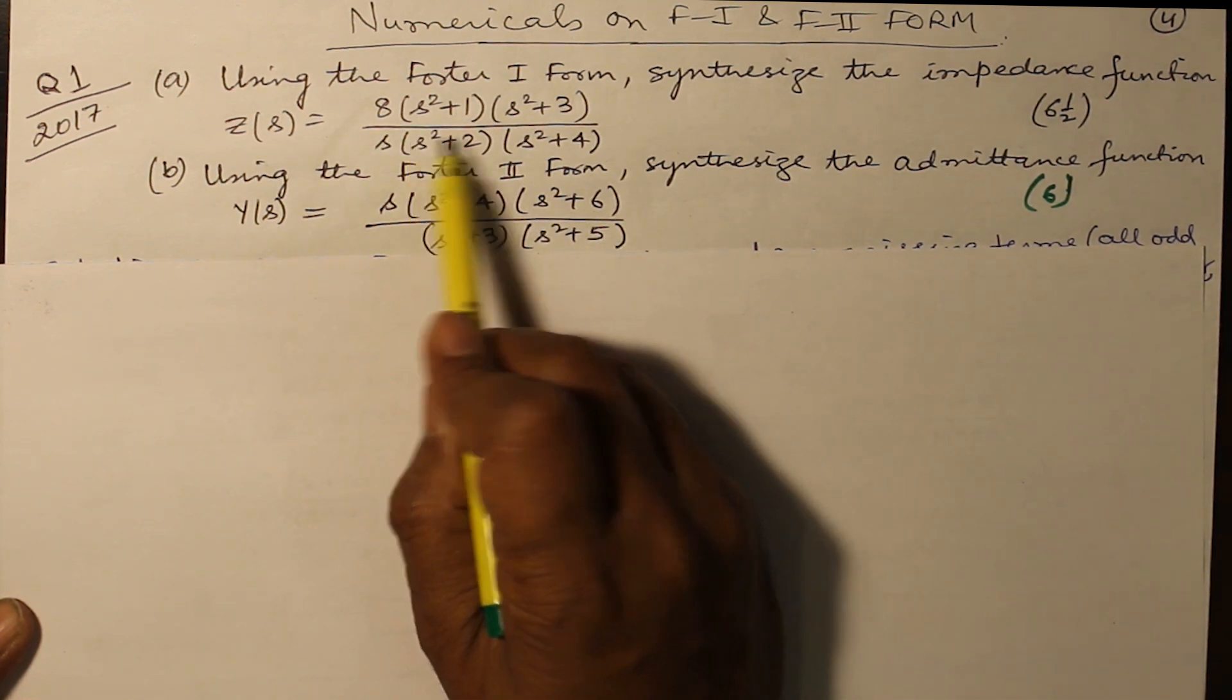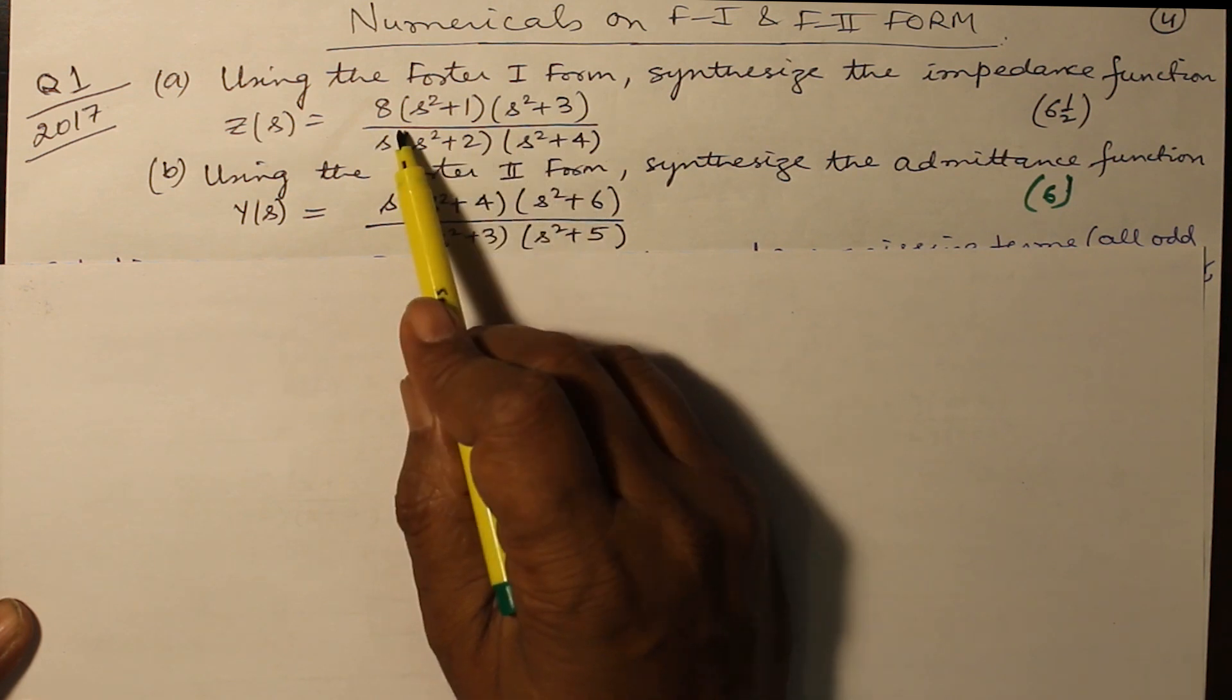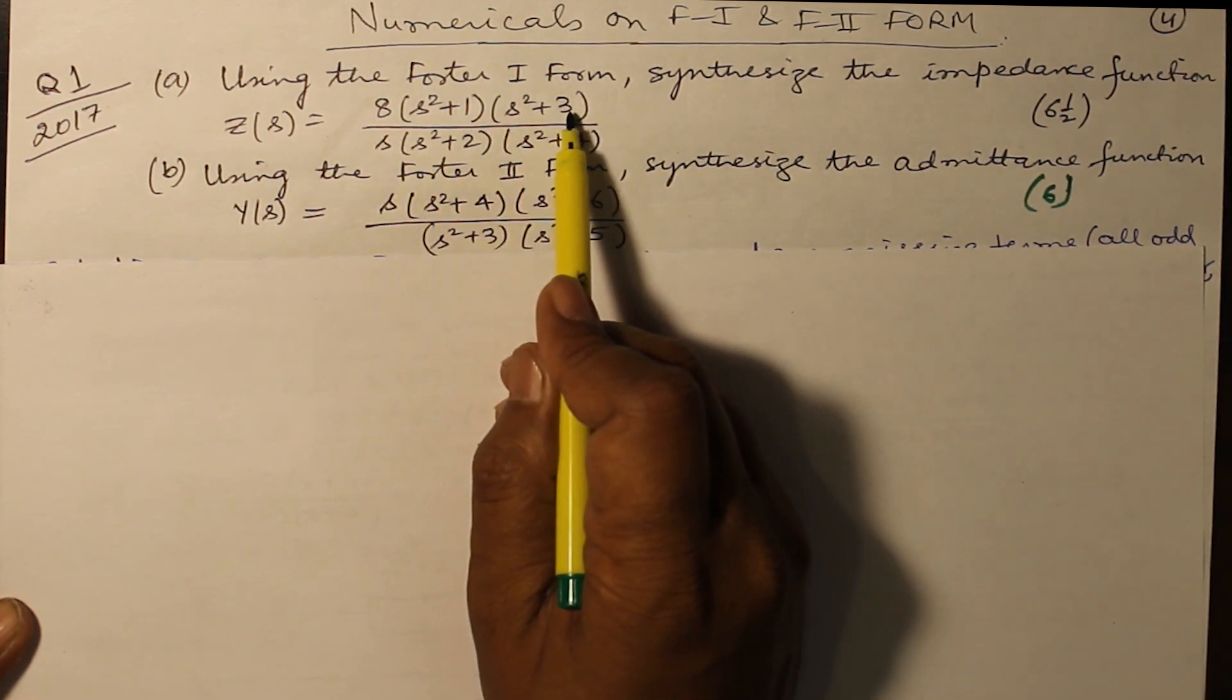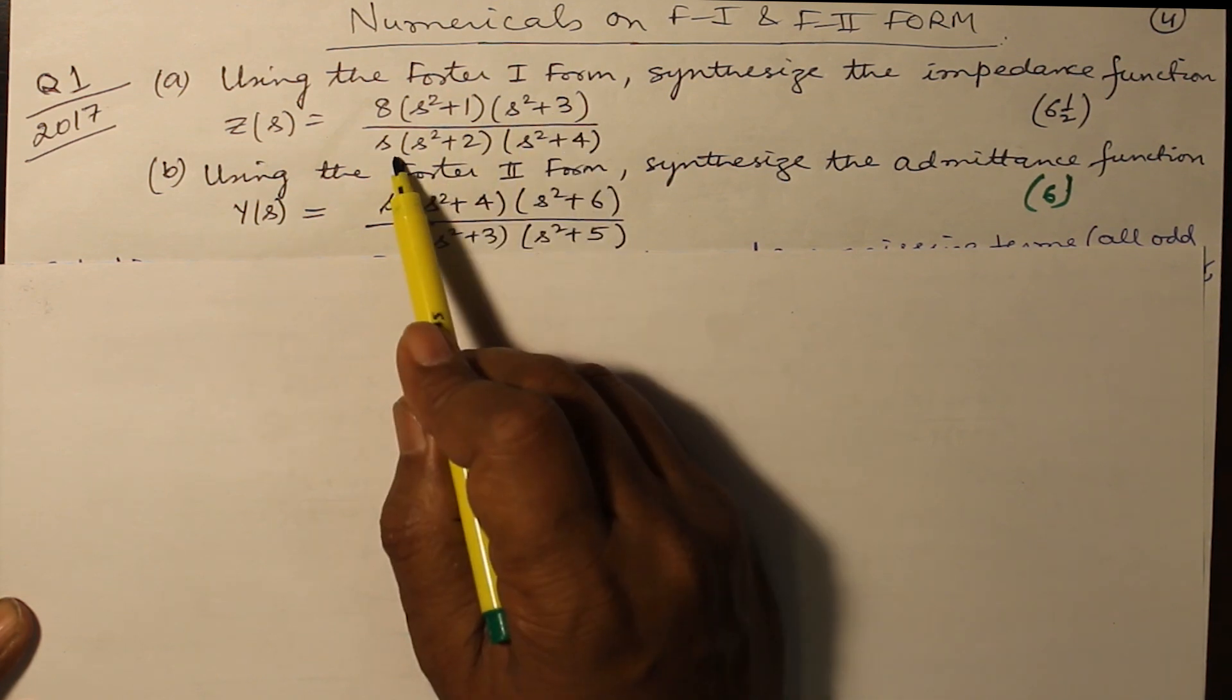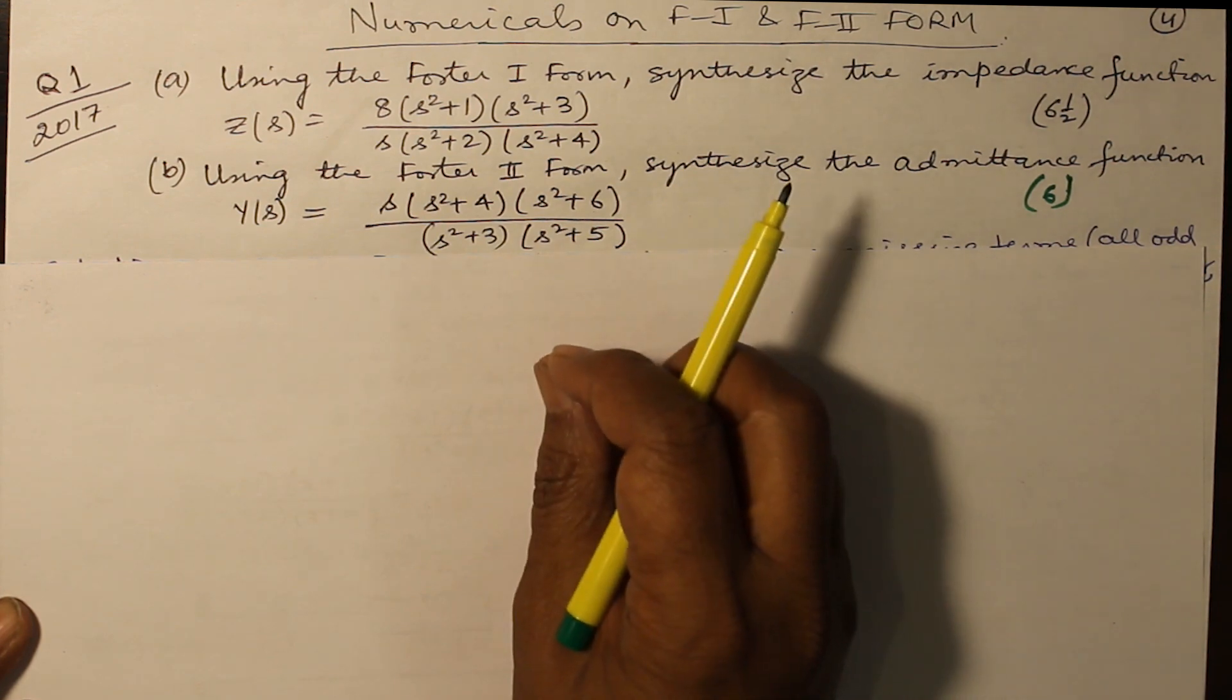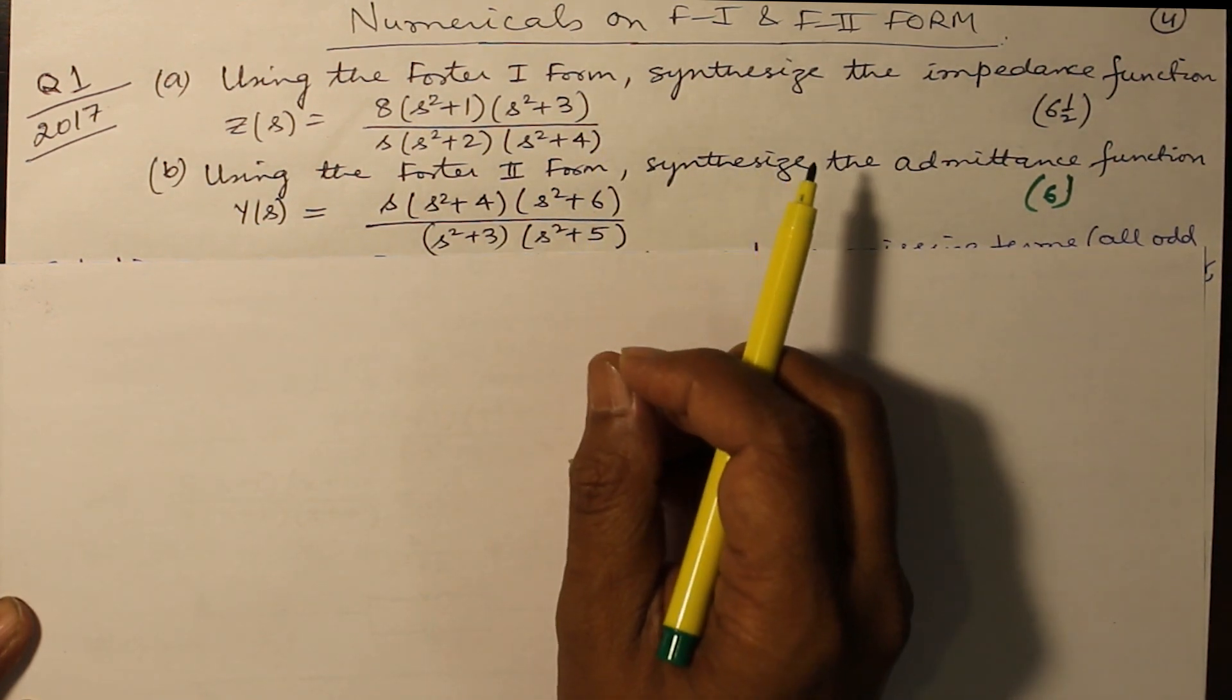But here you are not having the term of S. They are missing. Again, if you expand it, you will have even terms only, even powers only in the numerator and odd powers only in the denominator. Similar is the case here. This definitely means that you are going to get an LC network in the answer.